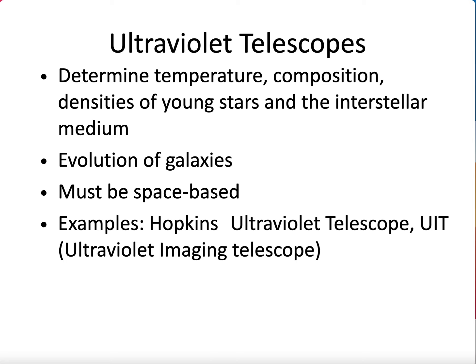Skipping over the visible spectrum, we go to ultraviolet telescopes. As you know — because you don't get a sunburn every time you walk outside — the atmosphere screens out UV pretty heavily. As far as I know, there are no ground-based UV telescopes. If you want to look in this frequency band, you have to go into orbit. The Hopkins was one of the earlier ones, then the UIT, and there's a whole fleet with a program lifecycle. UV is great for looking at star birth and short-wavelength high-resolution imaging of high-energy objects like very hot stars.